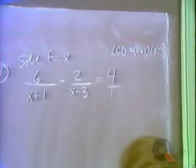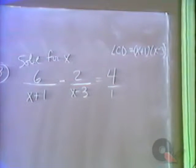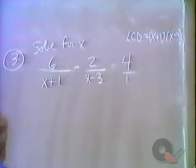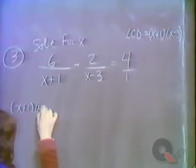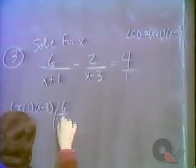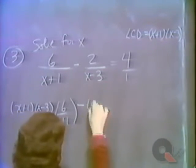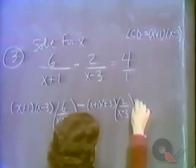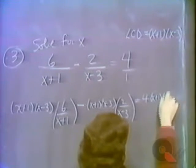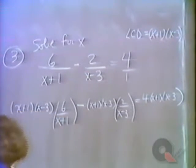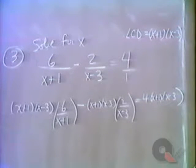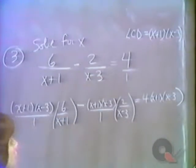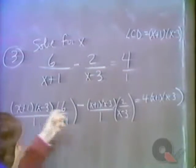We multiply each and every term by the LCD. We have x plus 1 times x minus 3 times 6 over x plus 1, minus x plus 1 times x minus 3 times 2 over x minus 3, equals 4 times x plus 1 times x minus 3. Multiplying each part by the LCD: in the first term the x plus 1s cancel, and in the second term the x minus 3s cancel.